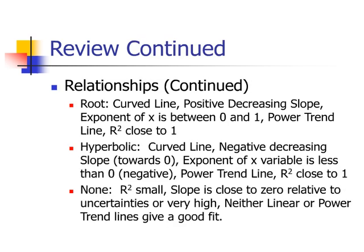The second three relationships are root, which is a curved line with a positive decreasing slope. That means the exponent of the x value is going to be between 0 and 1. Hyperbolic, you have a curved line. However, it's a negative slope, and it is decreasing towards 0. The exponent of the x variable is always going to be less than 0, which means the equation basically is going to be negative. And then finally, no relationship, which means you're looking for a slope that is very close to 0, or very high, a very small coefficient of determination, and really neither of any types of Excel trend lines are going to give you a really good fit.